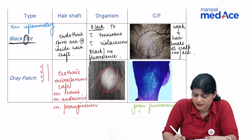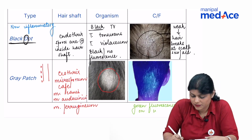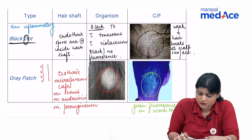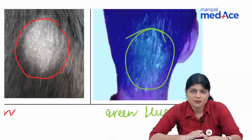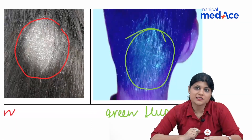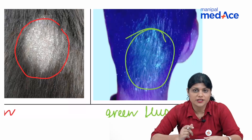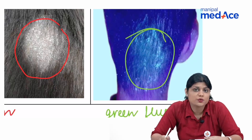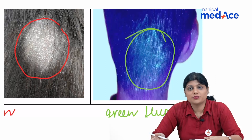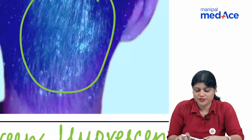In grey patch, there is a patch of hair loss appearing grey. Since the spores are present outside the hair shaft, they break the hair 3 to 4 mm above the scalp surface.